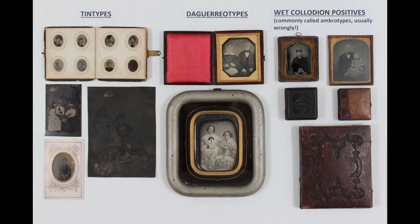The Daguerreotypes and Ambrotypes were usually taken and processed at a studio, whereas Tintypes could be made at a fixed studio or a more portable arrangement set up in a park or at the seaside, for example. In all these cases, the portraits were usually taken to mark an event or something of significance. Therefore these three processes were very important in documenting the social history of the 19th century, extending into the early 20th century in the case of the Tintype.